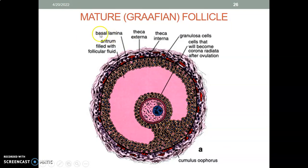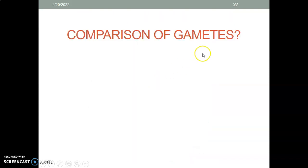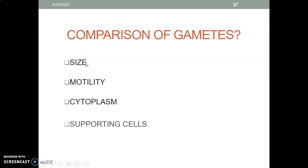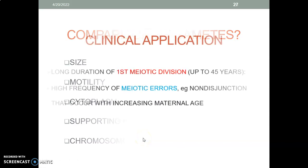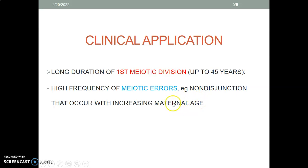This is a mature Graafian follicle showing the cumulus oophorus, corona radiata cells around the oocyte, the thick glycoprotein zona pellucida, the antrum filled with fluid, and the theca interna and theca externa layers. Comparing male and female gametes: the female is bigger; the male is more motile; the female has more cytoplasm; the male is supported by Sertoli cells and the female by follicular cells; the male has XY sex chromosomes while the female has XX. In prolonged maternal age, such as a woman of 45, the egg is prone to meiotic errors due to prolonged duration within the first meiotic division.